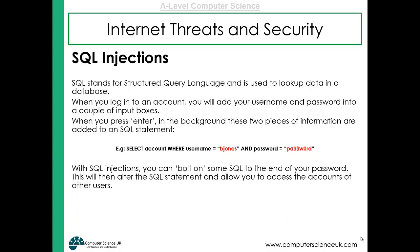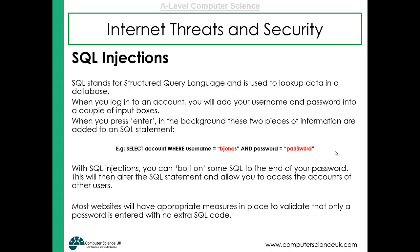With an SQL injection, a criminal might bolt on some SQL at the end of the password field, which alters the overall SQL statement and allows access to other users' accounts. For example, they might add 'OR *' — an asterisk wildcard — to the end of a made-up password. So the statement becomes: 'SELECT account WHERE username is bjones AND password equals [password] OR *'. That wildcard means it doesn't matter what the actual password is — access is granted. Most websites have measures to validate that only a password is entered, with no SQL code in addition.